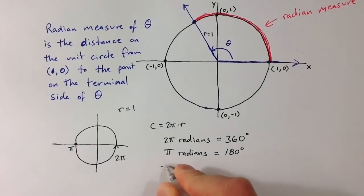We could also take a look at negative π over 2. A negative angle means that we're going to rotate in a clockwise direction. And π over 2 is half of π. So we would go one fourth of the way around the unit circle.